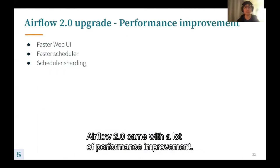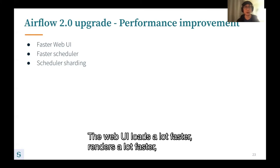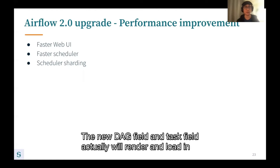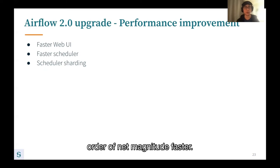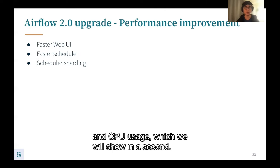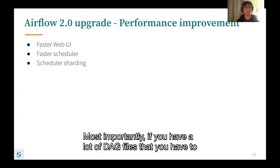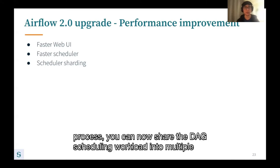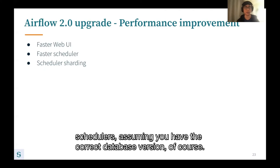Airflow 2.0 came with a lot of performance improvements. The web UI loads and renders a lot faster, especially for large DAGs — the new DAG view and task view render an order of magnitude faster. The new scheduler also runs a lot faster and consumes much less memory and CPU. Most importantly, if you have a lot of DAG files, you can now shard the DAG scheduling workload into multiple schedulers, assuming you have the correct database version.